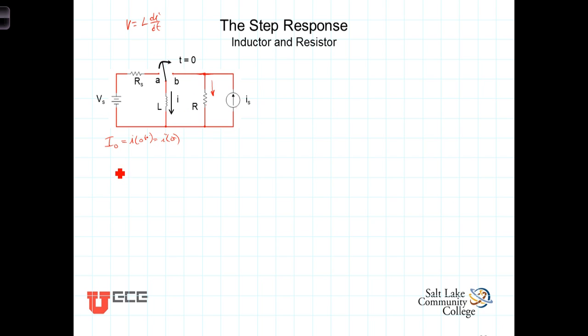we've got KCL. We have I, the current through the inductor, plus the current through the resistor is going to be L dI/dt, which is the voltage divided by the resistance, or L dI/dt divided by the resistance, minus Is equals 0.